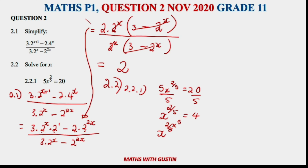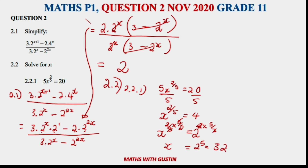Now we want the power gone, so raise both sides to the power of five-halves. The exponents on the left cancel out. The 4 can be written as 2 squared, also raised to five-halves. The 2s cancel, leaving x equals 2 to the power of 5, which is 32.